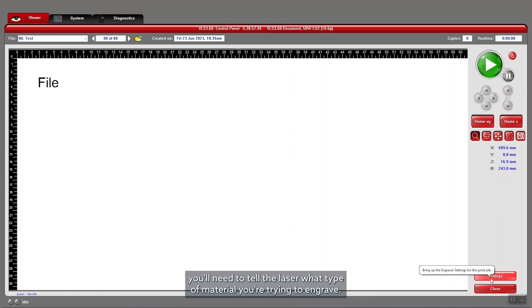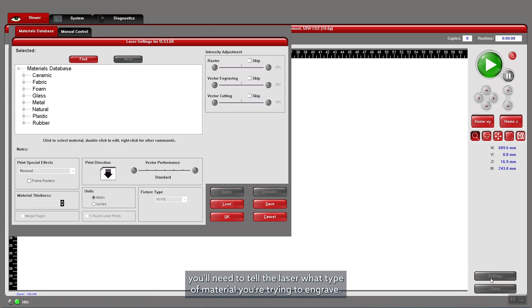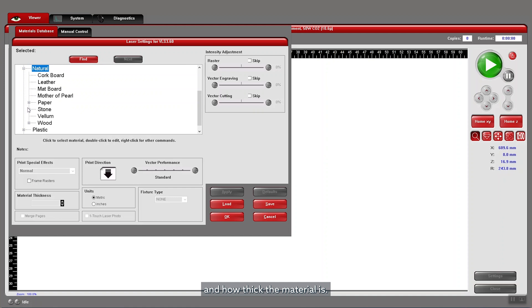With your file loaded, you'll need to tell the laser what type of material you're trying to engrave. You can do this through the Settings tab in UCP at the bottom right corner. Find the material you'd like to use through the Options menu and how thick the material is.